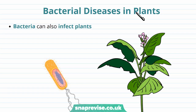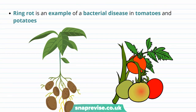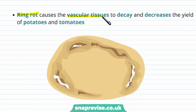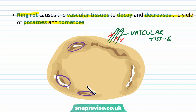We also see bacterial diseases in plants. They can infect plants in a similar way and end up in various parts of the plant deep within the tissues. An example is ring rot, a bacterial disease found in tomatoes and potato plants. Ring rot causes the vascular tissues of the plant to break down and decay, decreasing the yield of potatoes and tomatoes. The bacterium destroys these vascular tissues, hindering the transport of important chemicals, leading to decaying areas in the vegetables and a decreased yield.